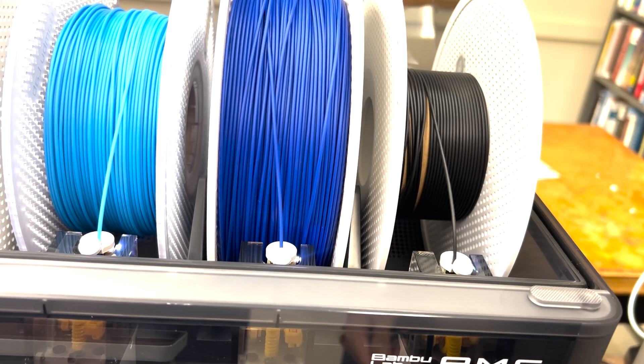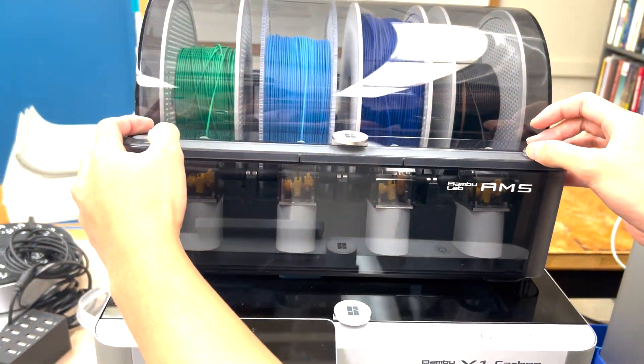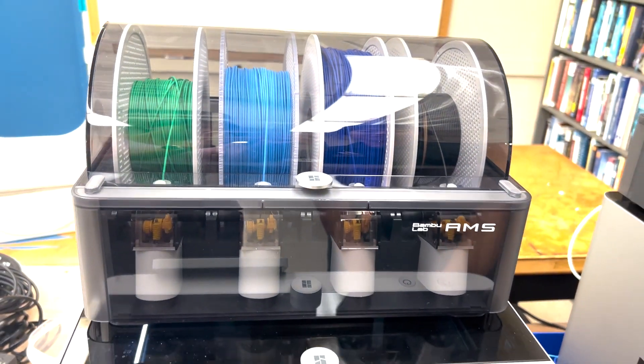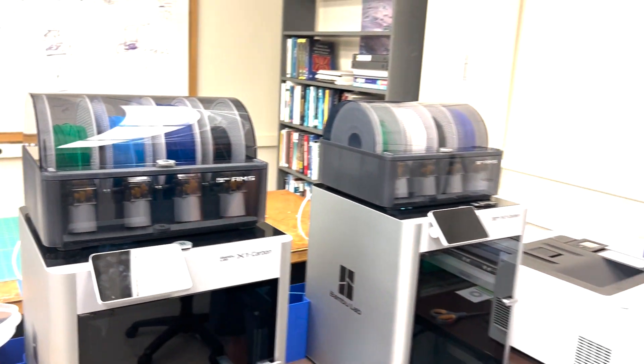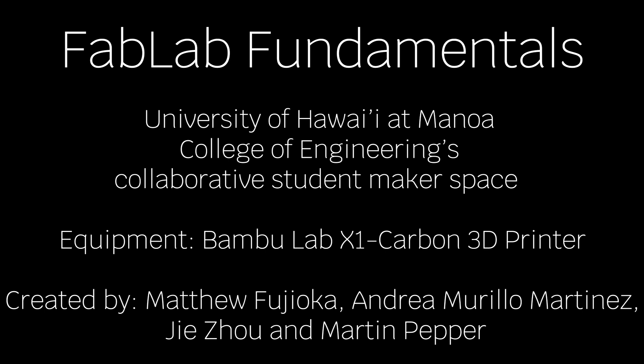And then we can close the AMS system and rotate the two notches outward. And that's how you change the filament on a Bamboo X1 Carbon 3D printer. Thank you.